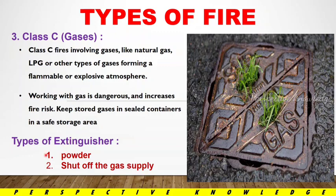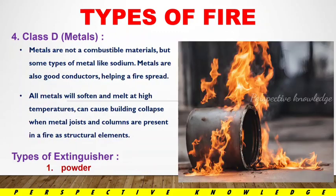For Class C fire, we use a powder-type extinguisher. The most important step is to shut off the gas supply — we cut the supply first. Moving on to the fourth class: Class D involves metals. Most metals are not combustible, but some types, like sodium, are good conductors that help fire spread. All materials will soften and melt at high temperatures, and metal joints and columns can cause building collapse in a fire.